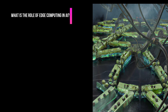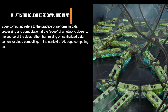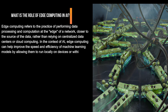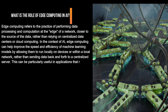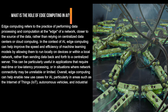What is the role of edge computing in AI? Edge computing refers to performing data processing and computation at the edge of a network, closer to the source of the data, rather than relying on centralized data centers or cloud computing. In the context of AI, edge computing can help improve the speed and efficiency of machine learning models by allowing them to run locally on devices or within a local network, rather than sending data back and forth to a centralized server. This is particularly useful in applications requiring real-time or low-latency processing, or where network connectivity may be unreliable. Overall, edge computing can help enable new use cases for AI, particularly in IoT, autonomous vehicles, and industrial automation.